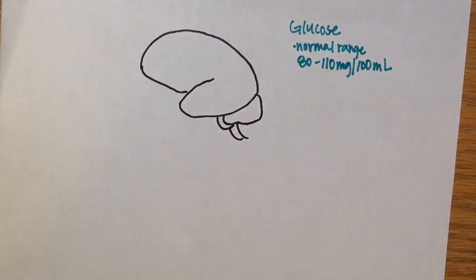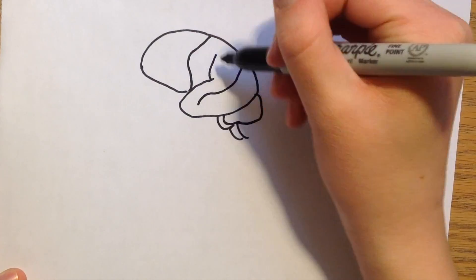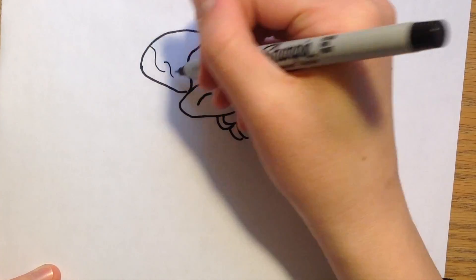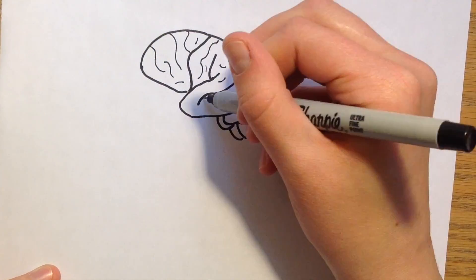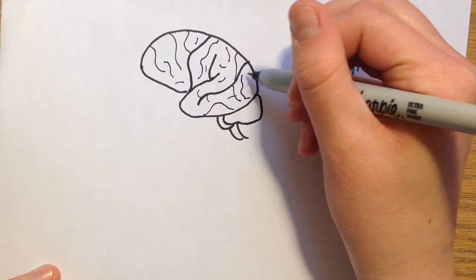If there is too little glucose, the brain is deprived of its main energy source, which can very quickly lead to coma or death.